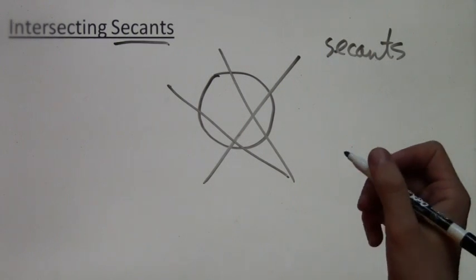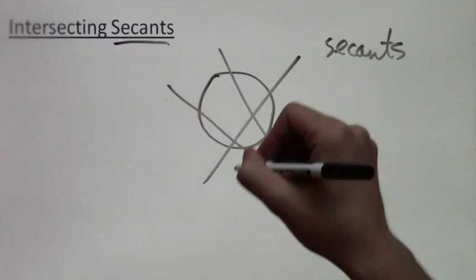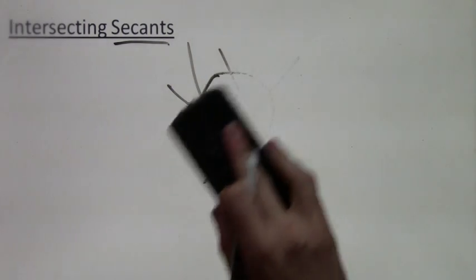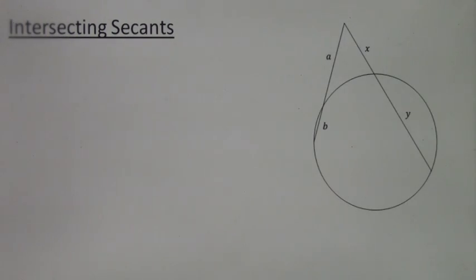And the secants that we're going to be worrying about are the ones that intersect outside of the circle. We're going to talk about this theorem.